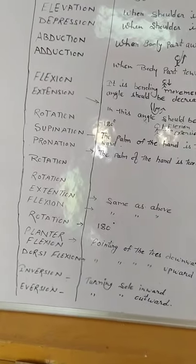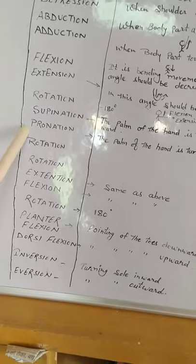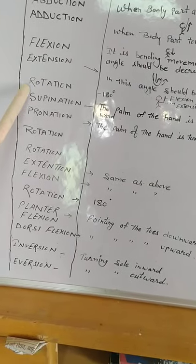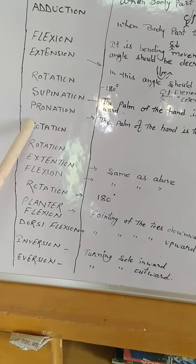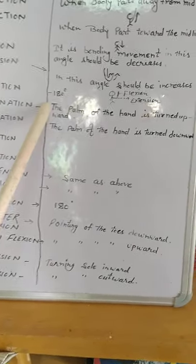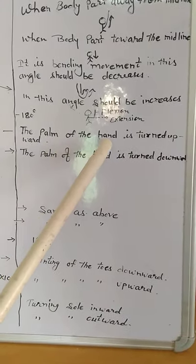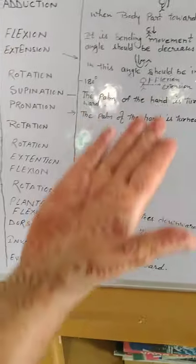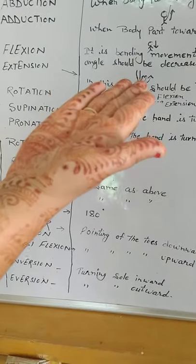Now wrist movement. In wrist, three types of movement are there: rotation, supination and pronation. In rotation, 180 degree. Supination means when the palm of the hand is turned upward. Like this. This is supination.